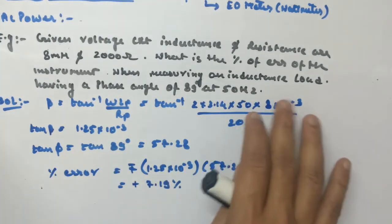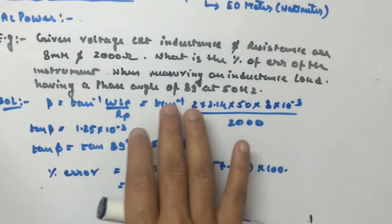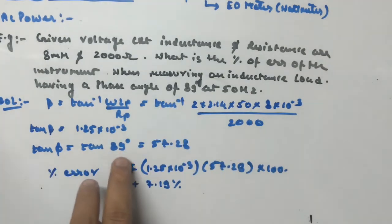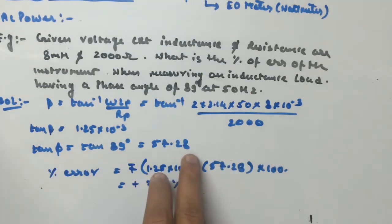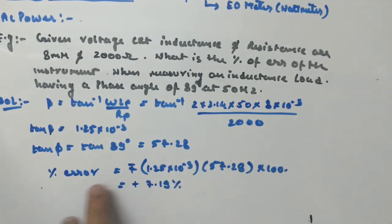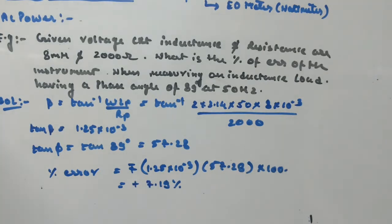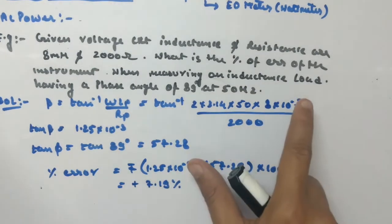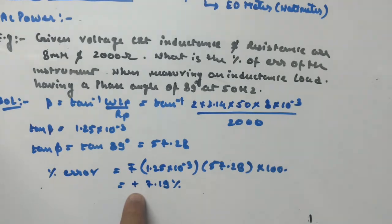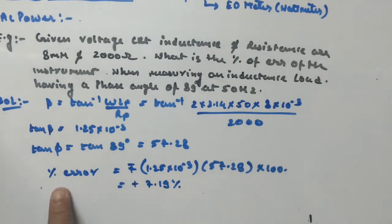It is given that it's an inductive load and 89° is the phase angle. So tan(89°) will be 57.28. So the percentage error will be ±(1.25 × 10⁻³) × 57.28 × 100, which gives 7.19%. Since it is an inductive load — a lagging load — the error is positive. So the percentage error will be +7.19%.